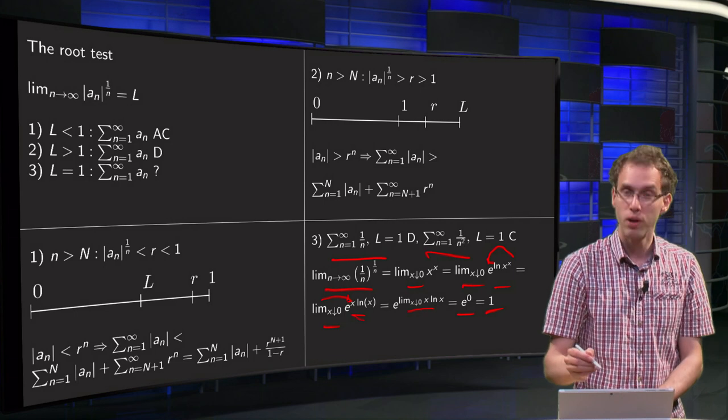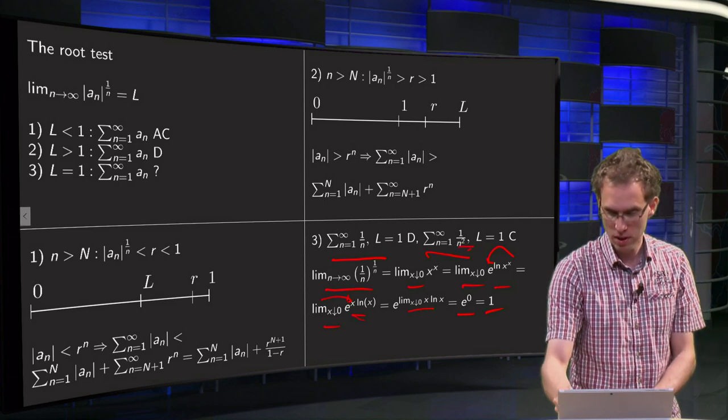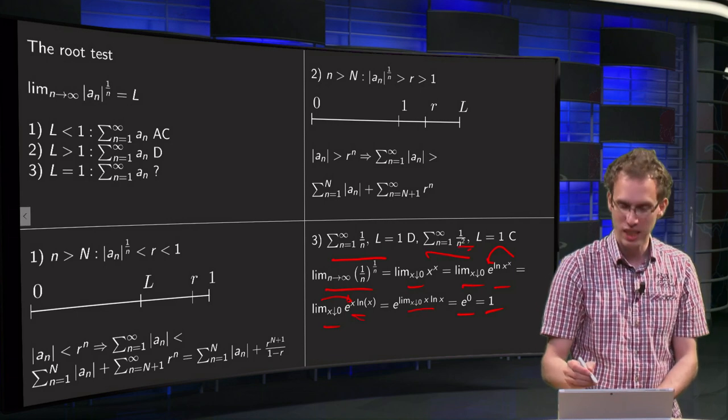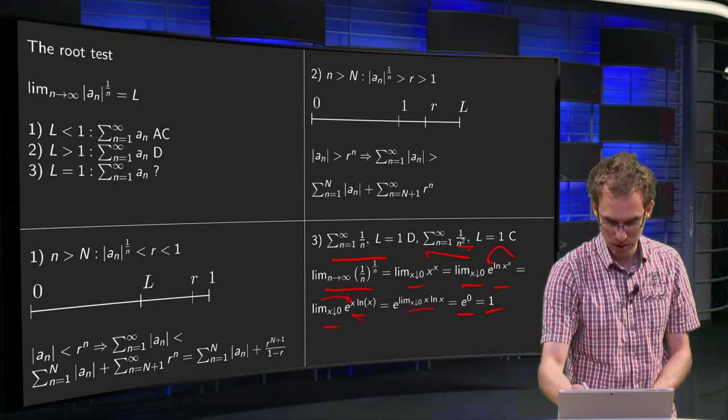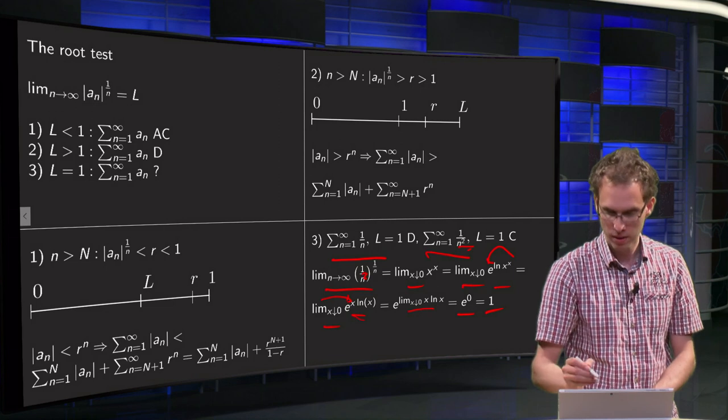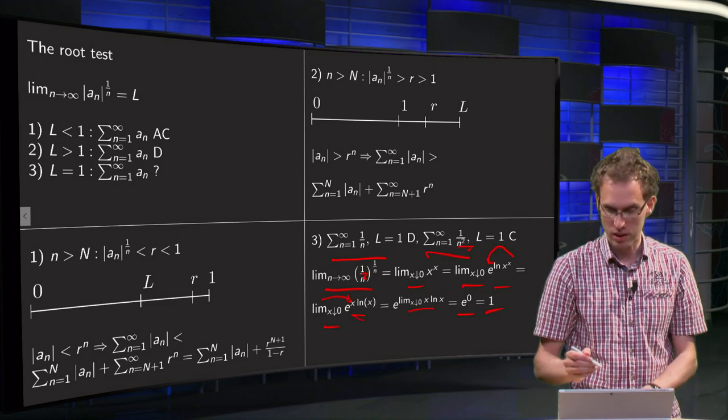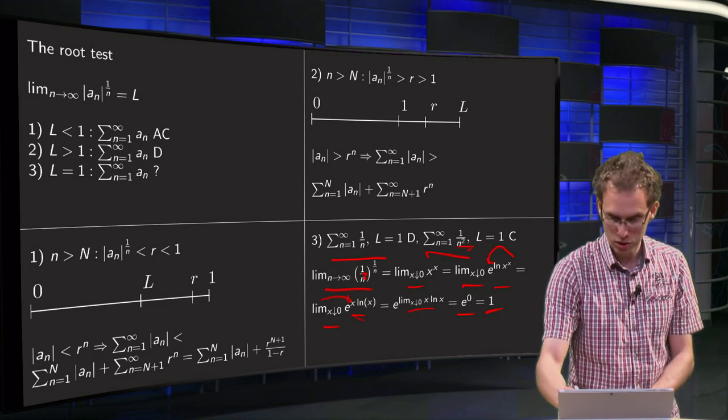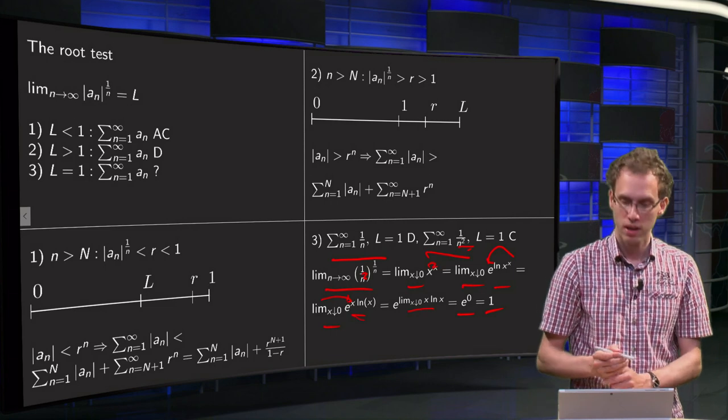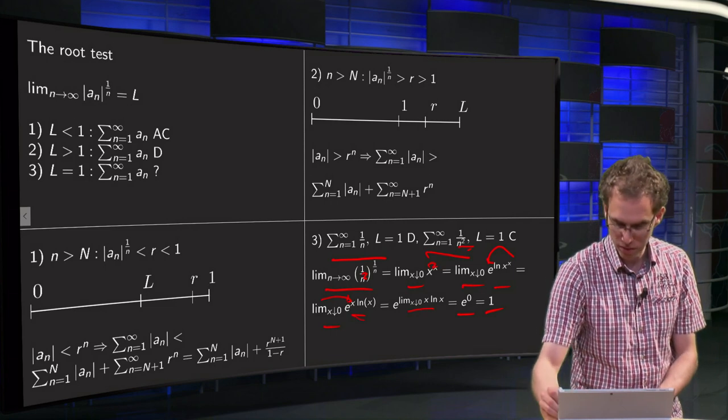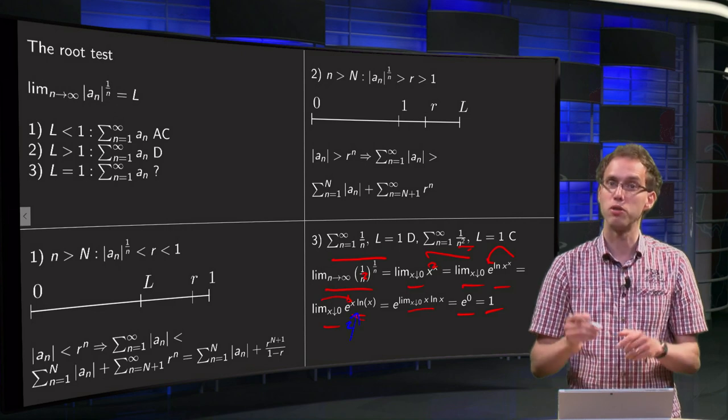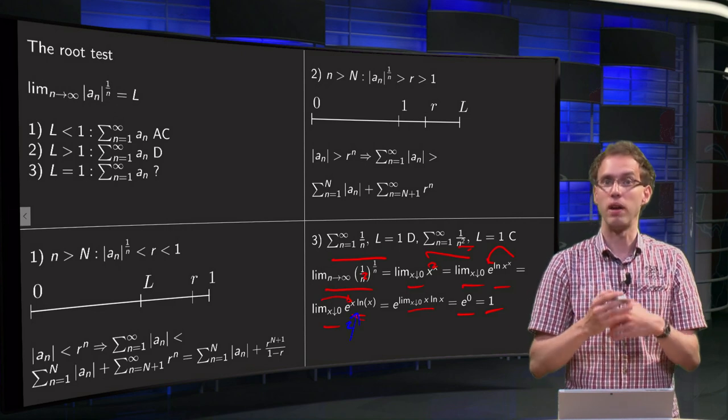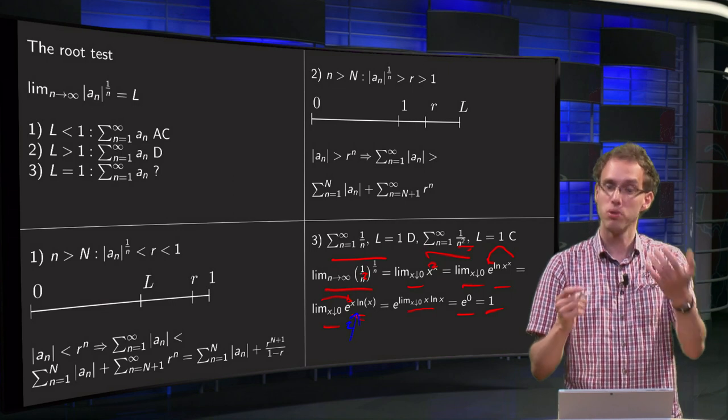So this is one of the boundary cases. If you would have instead of the 1 over n, the 1 over n squared, only thing that would change is n squared, which would be over here, you get x to the power 2x, and that would mean another factor of 2 just over there, e to the power 2x ln x, but then you get e to the power 2 times 0, so also 1.